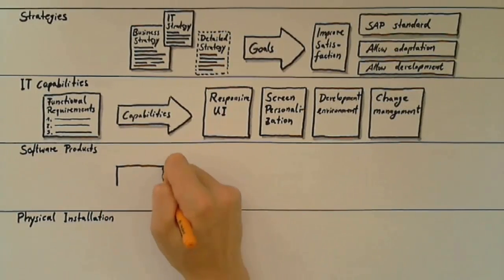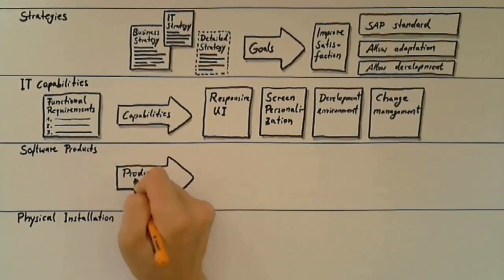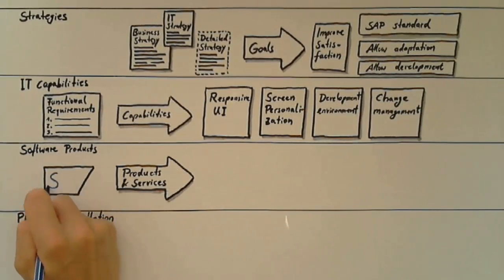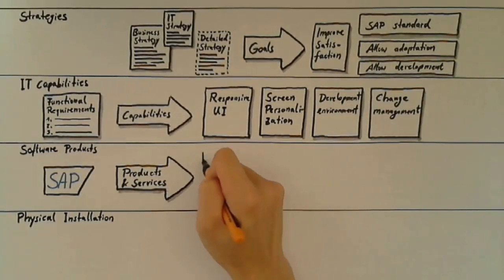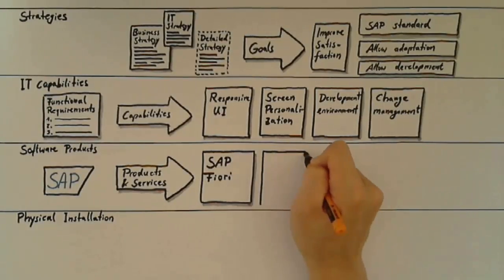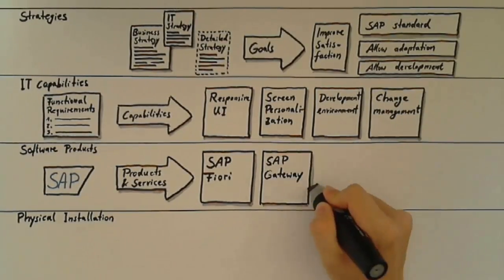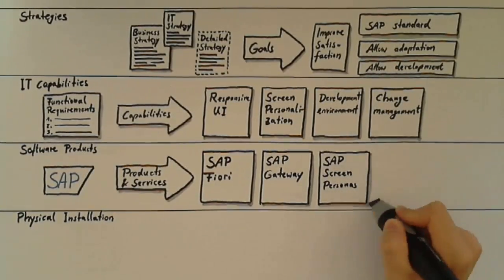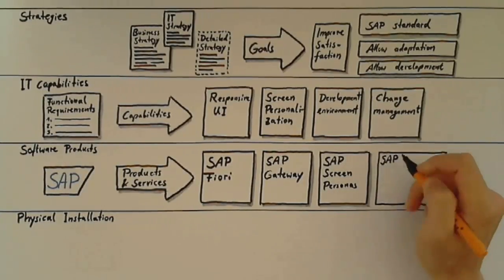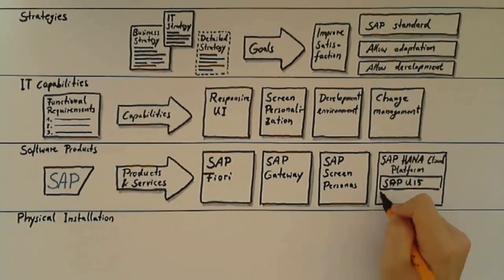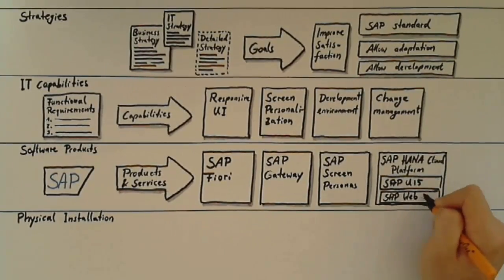Software products is the level that summarizes the products and services that are necessary to deliver the capabilities collected earlier. We are obviously focusing on SAP products here. Examples of SAP products are SAP Fiori, SAP Gateway, SAP Screen Personas, SAP HANA Cloud Platform which provides for instance valuable features such as SAP UI5 and SAP Web IDE.